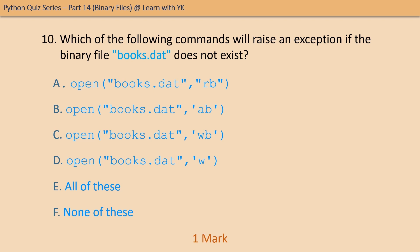Question number ten: which of the following commands will raise an exception if the binary file books.dat does not exist? Exception means runtime error. Pick the correct option. The correct option is option A — if we try to open books.dat in read mode and the file does not exist, it will raise a runtime error.